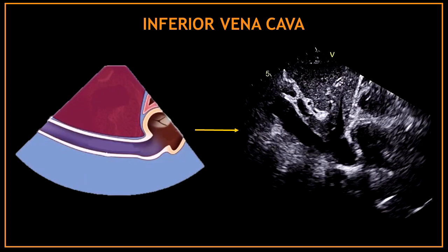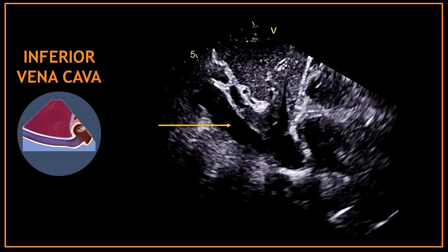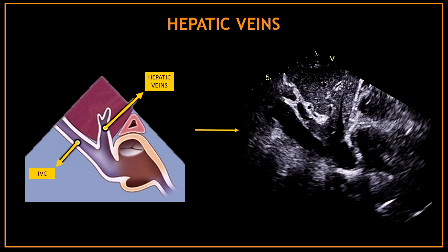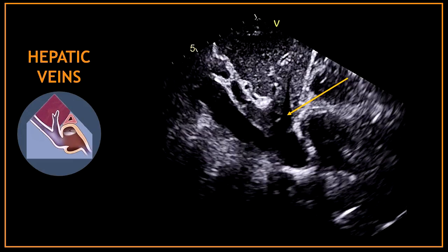One of the most important structures obtained from the subcostal view is the inferior vena cava. This black horizontal line is the inferior vena cava, and normally we assess here the inferior vena cava size and inspiratory collapse. Next to the inferior vena cava we can also find the hepatic veins — that black vertical line emerging from the inferior vena cava. This is also a very important structure to assess the right heart.